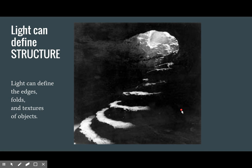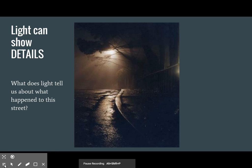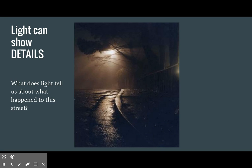Light can define the structure and the architecture of objects. Here we see the edges of these steps because the light is hitting them. Light can also show details — if you look at this picture, what do you think happened right before this picture was taken? If we look at this street and the texture of the street we can see that it's wet, and so we can understand that it probably rained right before this picture was taken.